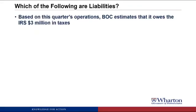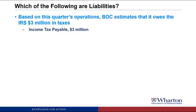Based on this quarter's operations, BOC estimates that it owes the IRS $3 million in taxes. This will be a liability — we'll call it income tax payable. Essentially, the government allowed us to operate our business, so we got the benefit of being able to operate in this country, and in return it created an obligation to pay taxes. We estimate the amount at $3 million, which we can do with reasonable certainty, giving us a liability called income tax payable for $3 million.